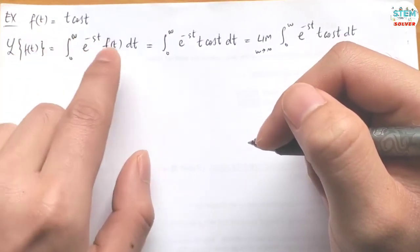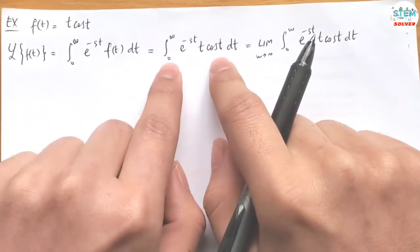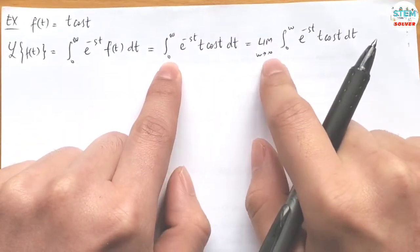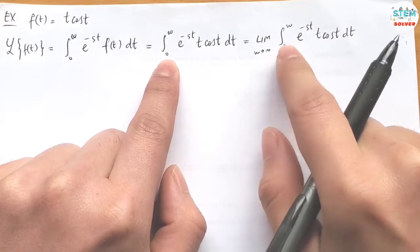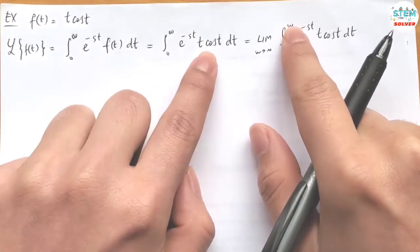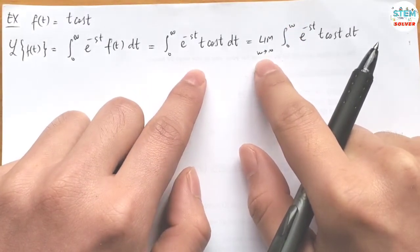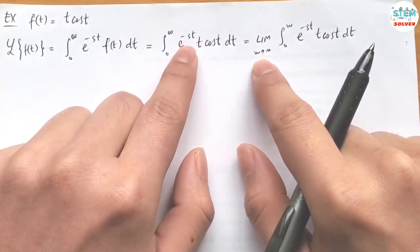So whatever f(t) is, you just plug it in here. Since we have an improper integral, we have to take a limit as w goes to infinity of the integral from 0 to w. It doesn't matter what letter you use here as long as it's different from t.